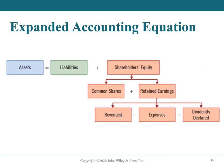Expanded accounting equation. Shareholders' equity is composed of common shares — one type of share capital — plus retained earnings. Retained earnings are equal to net income less any dividends declared. Net income, which equals revenues less expenses, increases retained earnings, while a net loss decreases retained earnings. Also, dividends when declared are a distribution of retained earnings to shareholders and result in a decrease to retained earnings. We have expanded the basic accounting equation to show the detailed components of shareholders' equity, as you can see in this illustration.